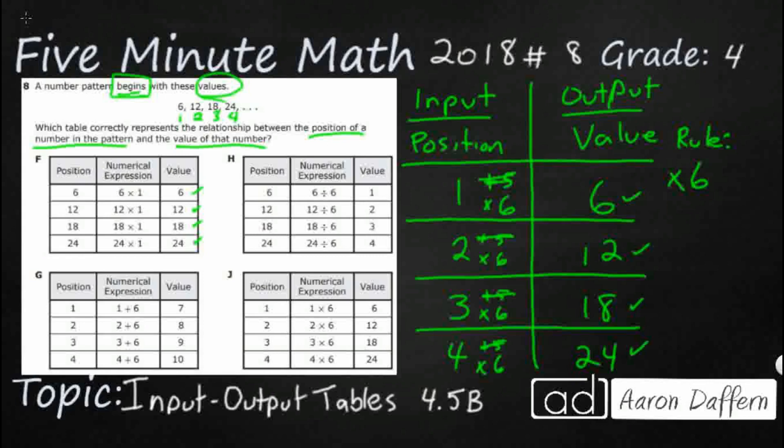But notice that their rule, instead of a multiply by 6, their rule is a times 1. That's where their rule shows up right there. So it's the only way to get the correct values, but the wrong rule is to have the wrong position.